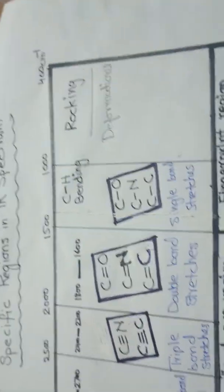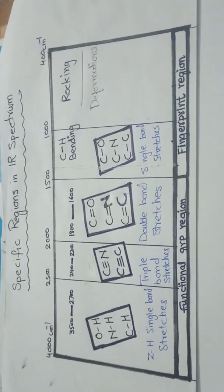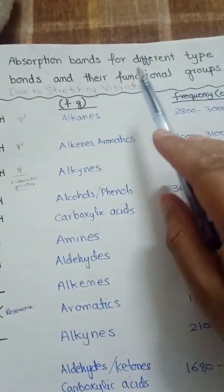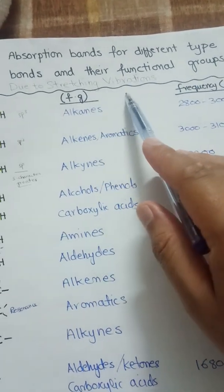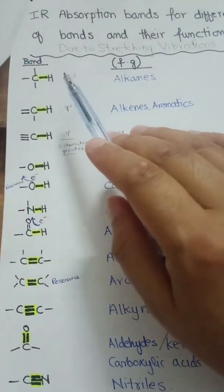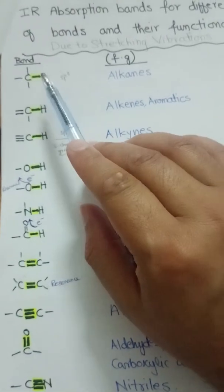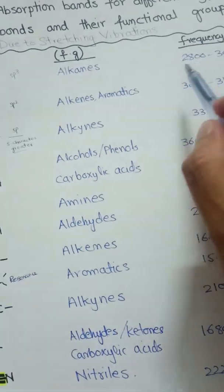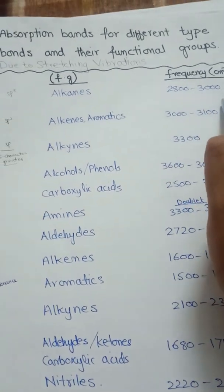We can now represent different functional group regions across the whole spectrum. Taking each functional group one by one, we look at absorption bands for different types of bonds due to stretching vibrations. For the C-H single bond with sp3 hybridization, the functional group is alkanes and the absorption frequency is from 2800 to 3000 per centimeter.